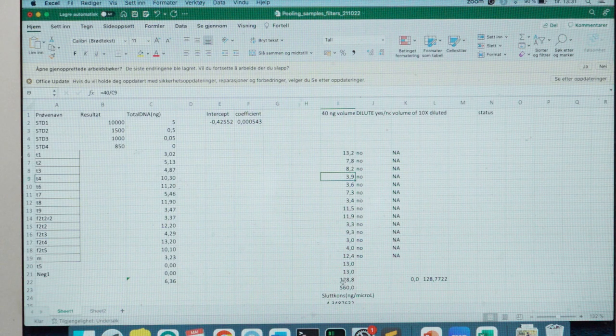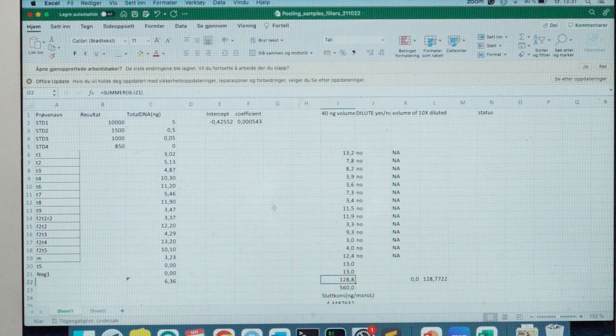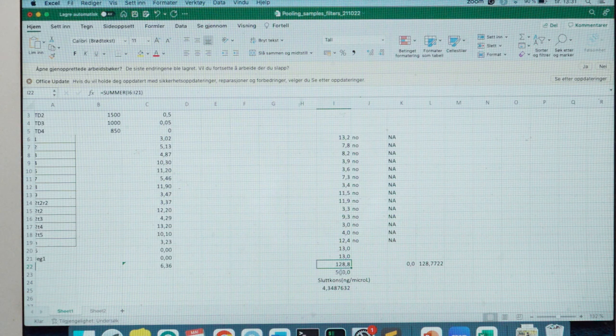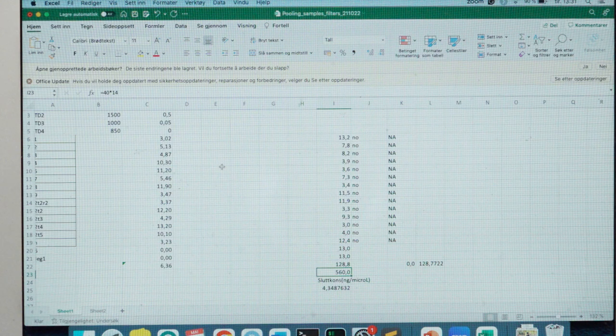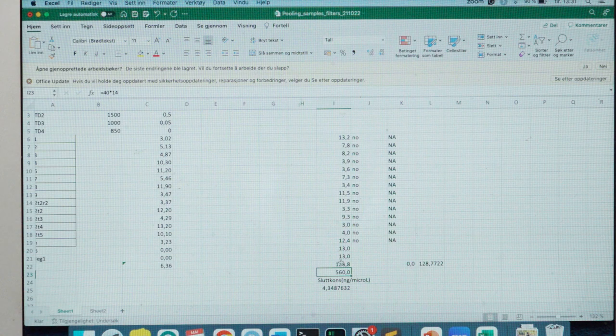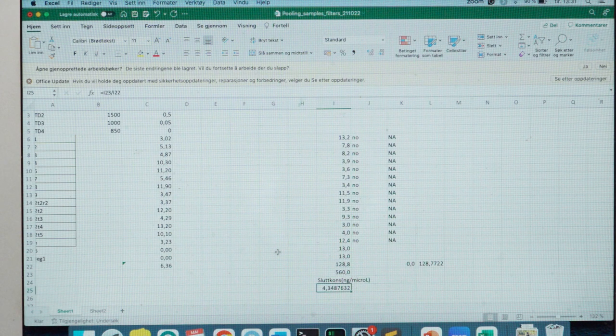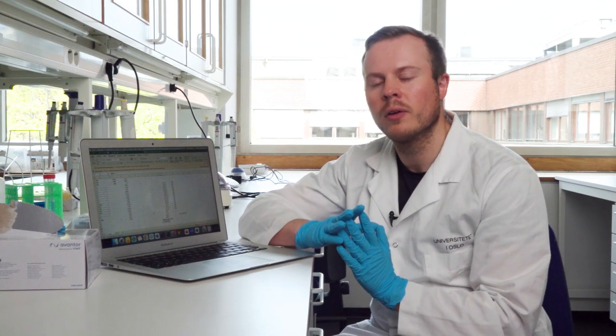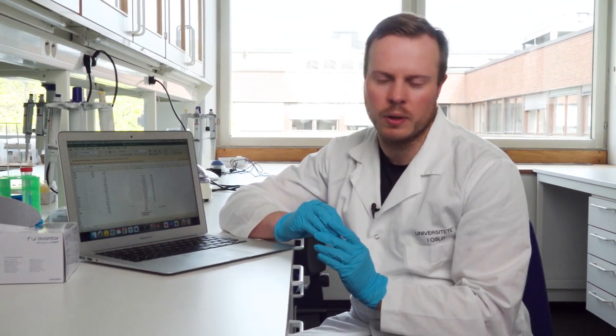Okay, and then you sum all of this to get the total of all the volumes here, to get the total volume of the pool, which is here, 128 microliters. And you also multiply 40 with the amount of samples you have, which is 14 in this example, to get the total amount of DNA. And then you divide the total amount of DNA by the volume to get the final concentration in the pool, which is here, 4.34. And it should be more than 1.5, in best case, more than 2 nanograms per microliter in the final pool concentration, just to be sure that the sequencing works.